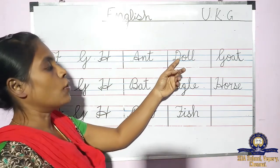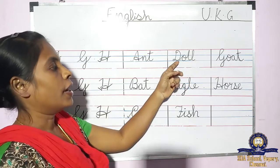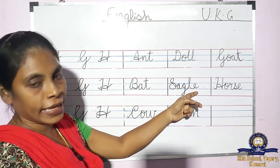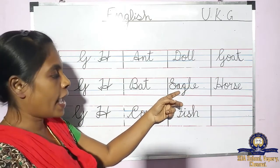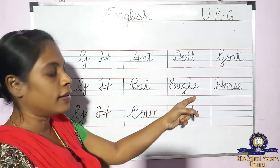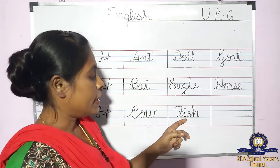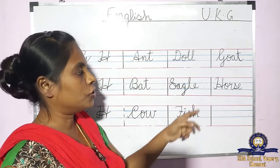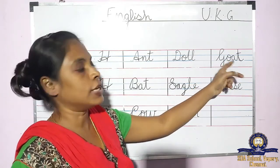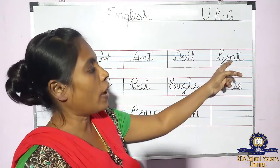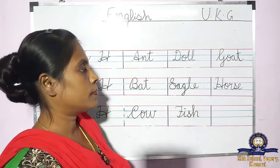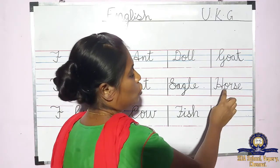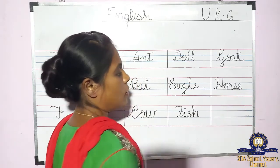Again — D, O, L, L, you have to touch the line and write. D, O, L, L — doll. E, A, G, L, E — eagle. F, I, S, H — fish. G, O, A, T — goat. H, O, R, S, E — horse.